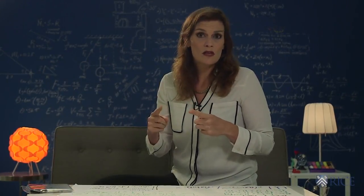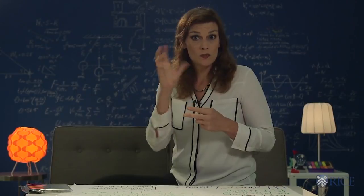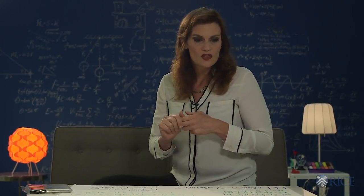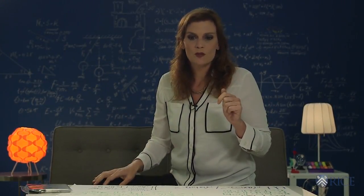This problem asks us to calculate the angular momentum of the Earth in two ways: one, its orbit around the Sun, and one, its spin, its rotation. And so we have to do a couple of things before we can do angular momentum.